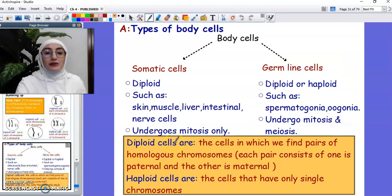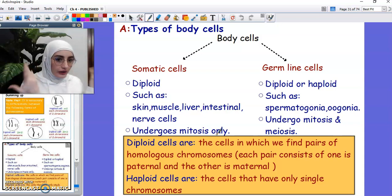Now we're going to talk about the types of body cells. In our body we have cells known as the somatic cells, and we have cells known as the germline cells or the sex cells. The somatic cells, what characterizes them is that they're diploid, such as skin cells, muscle cells, liver cells, intestinal cells, nerve cells, and so on. They undergo mitosis only and they multiply. Like when we lose skin cells during summer, if we had a kind of tan or something, we will not peel our skin forever. Later on we will have the skin cells multiplying and recovering the cells that were dead or lost.